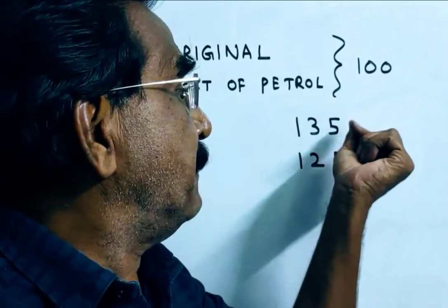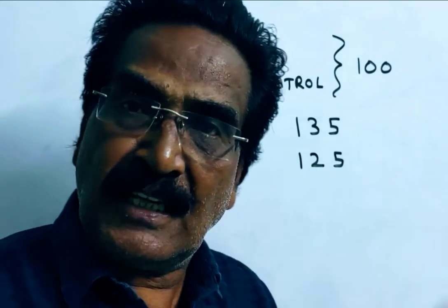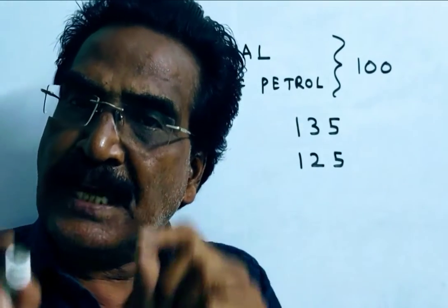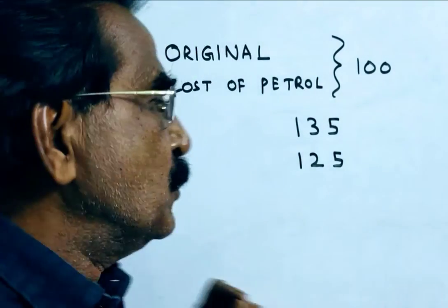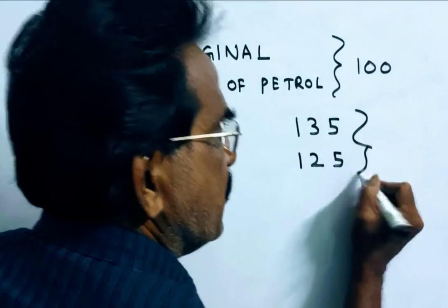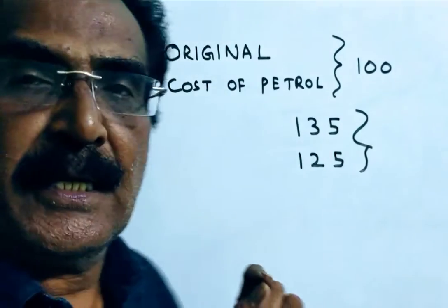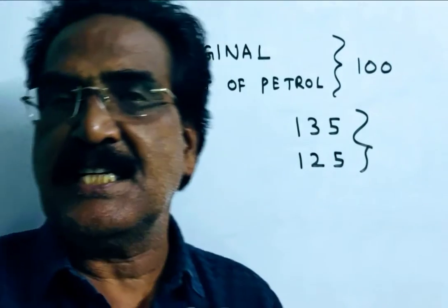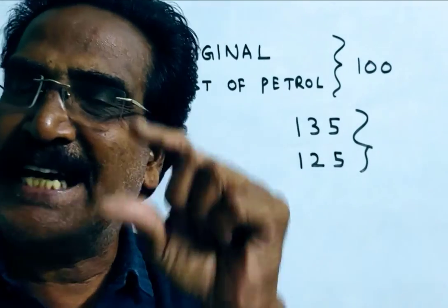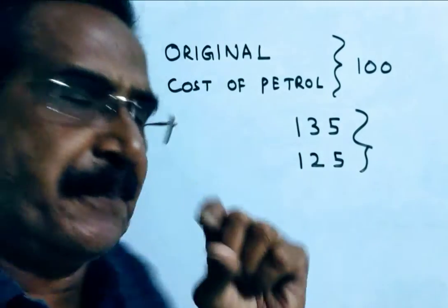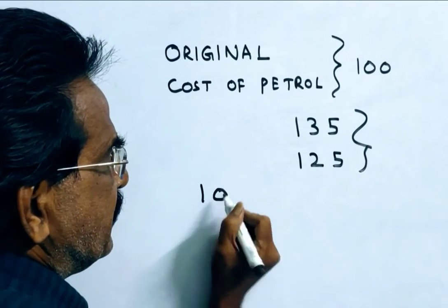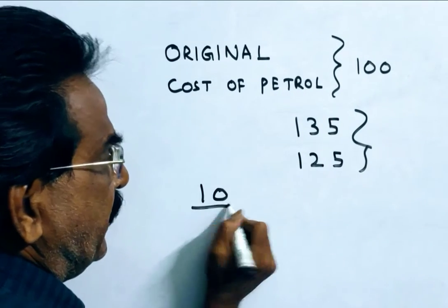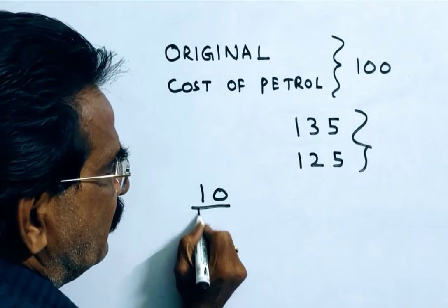The present price is 135 rupees, but Rajesh wants to spend only 125 rupees on petrol. So he has to reduce his consumption to the extent of 10 rupees. The deduction percentage is equal to 10 over 135, multiplied by 100.